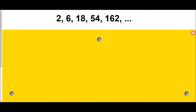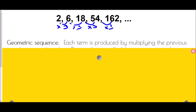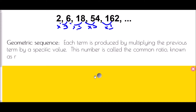Next, let's look at the sequence 2, 6, 18, 54, 162. Quite clearly this isn't just adding the same amount — we've gone up by 4, then 12, then 36. There must be a different rule. In this case we have multiplication: multiplied by 3 each time. If we are multiplying by the same amount every time, that is a geometric sequence. Each term is produced by multiplying the previous term by a specific value called the common ratio, r. Here r equals 3.